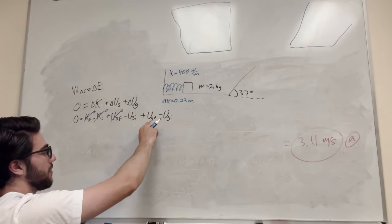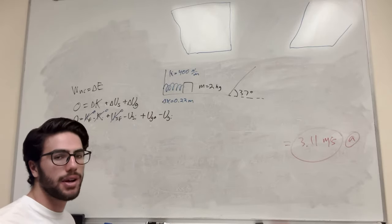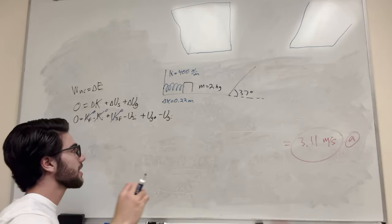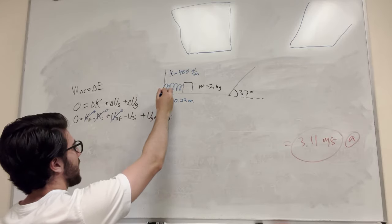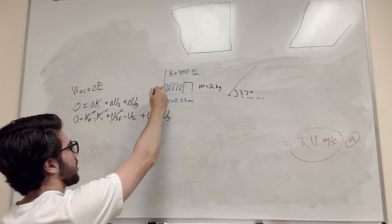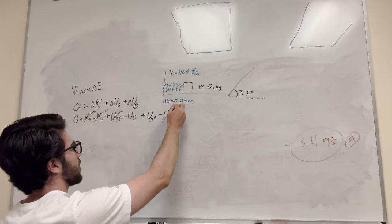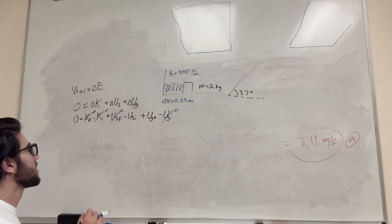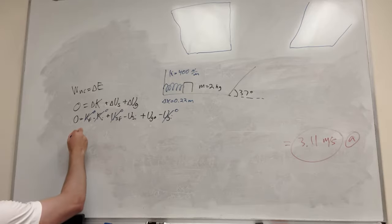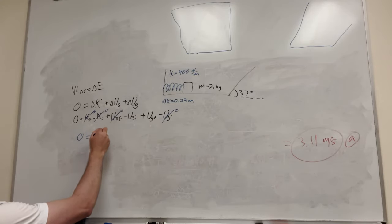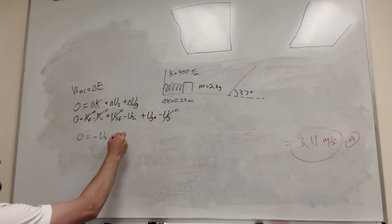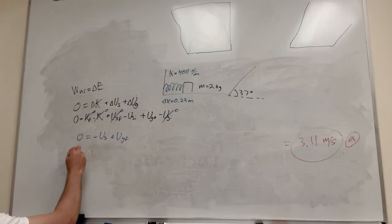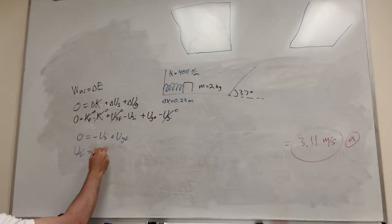Our gravitational potential energy final is a value we do concern ourselves with because it goes up the hill. We take the initial position as our baseline where height equals zero, so at the beginning it has zero initial gravitational potential energy because it's only going upward from there. This leaves us with the equation: negative U-spring-initial plus U-gravity-final equals zero, which we rewrite as U-spring-initial equals U-gravity-final.